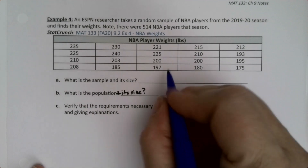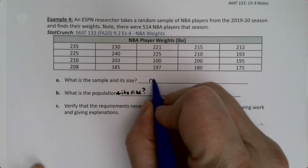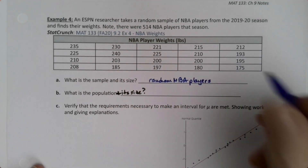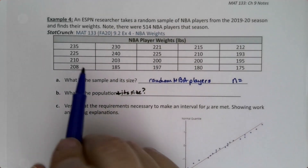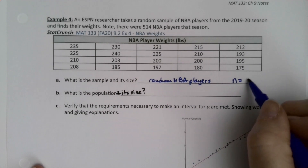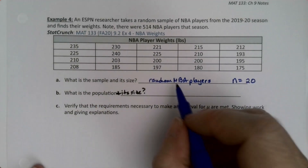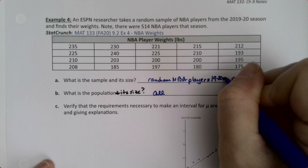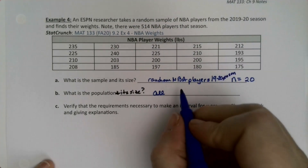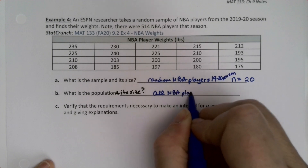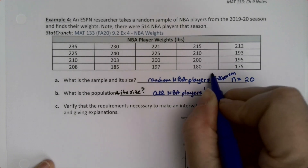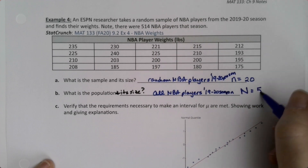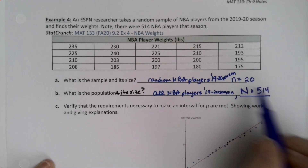The sample was the random NBA players — the players themselves are the sample, and the sample size, little n, is 20. You can see four rows times five columns equals 20. The population would be all NBA players from the 2019-20 season, and capital N, the population size, is given as 514.